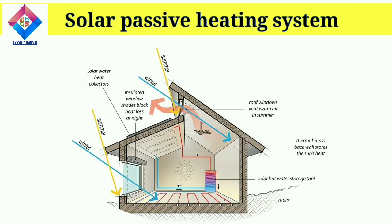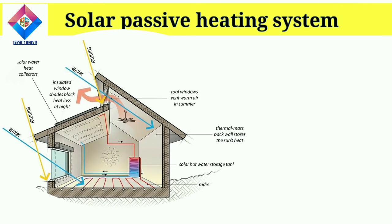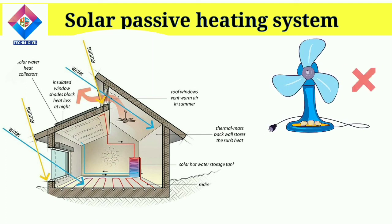We discuss about the solar passive space heating system. First of all, we know why we call it a passive system. The passive system is nothing but a system which does not include any mechanical devices — we run the system without using mechanical devices. This system is called a passive system.